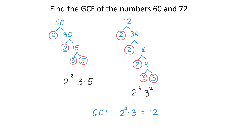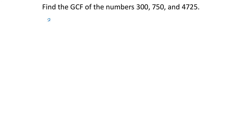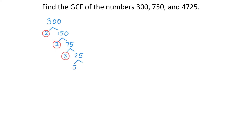Now, let's see another example where we will find the greatest common factor of three numbers: 300, 750, and 4725. Let's start with the prime factorization for 300. 300 divided by 2 is 150. 150 divided by 2 is 75. 75 can't be divided by 2, but we can divide it by 3. 75 divided by 3 is 25. Then, 25 divided by 5 is 5. The prime factorization for 300 is 2 squared times 3 times 5 squared.